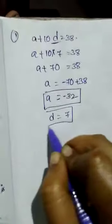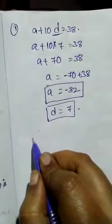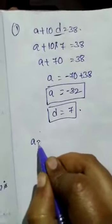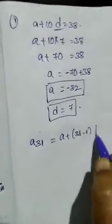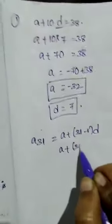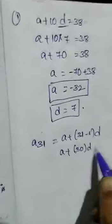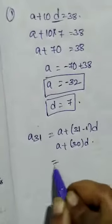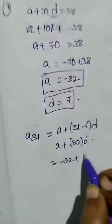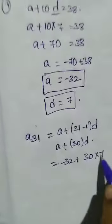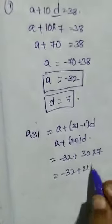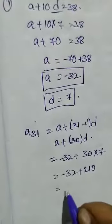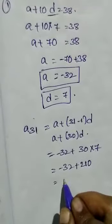So we have to find 31st term: A plus 31 minus 1 into D, A plus 30D. A value is minus 32 plus 30 into D is 7. Minus 32 plus 210, 210 minus 32 is 178.